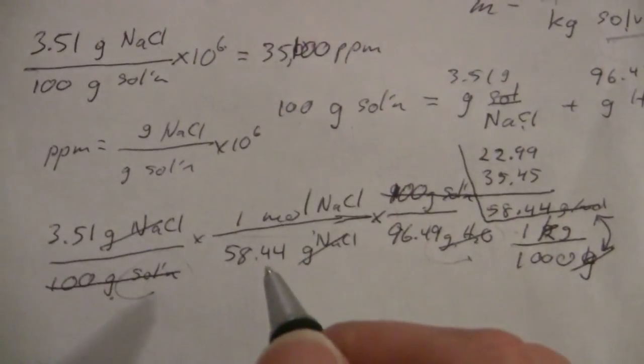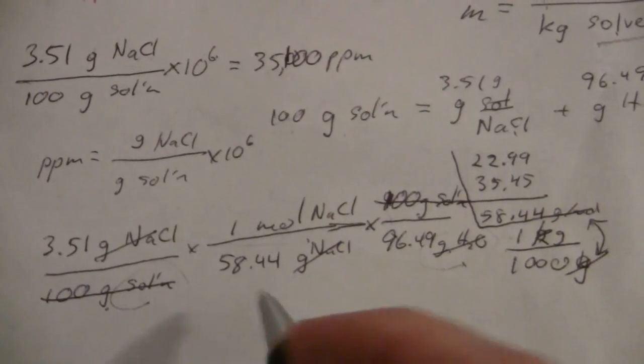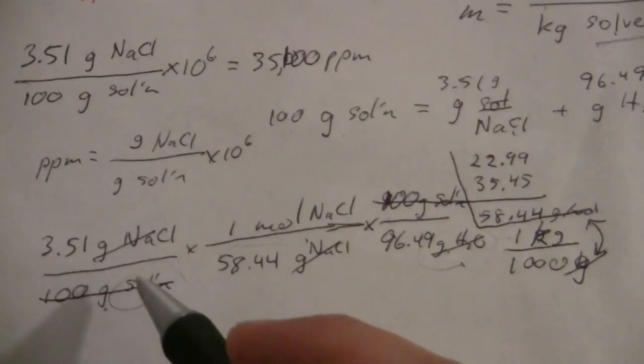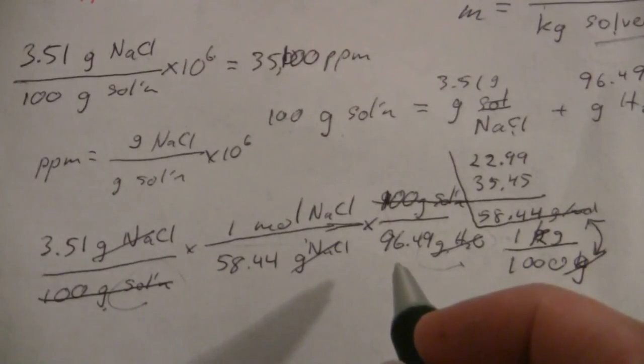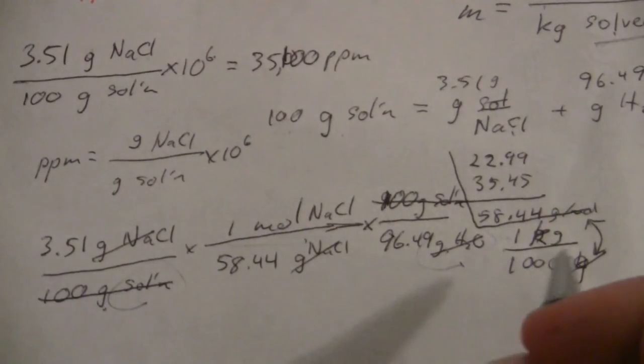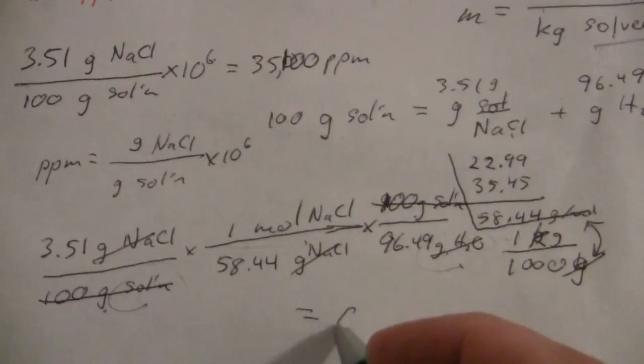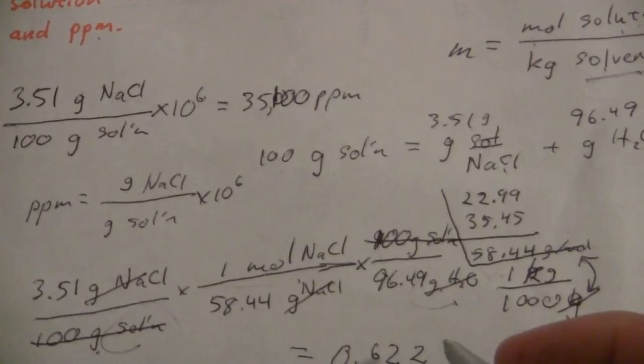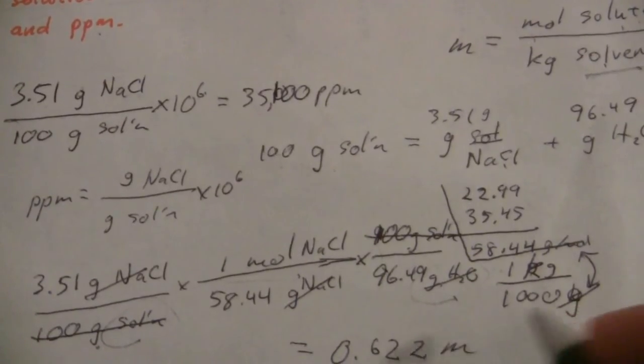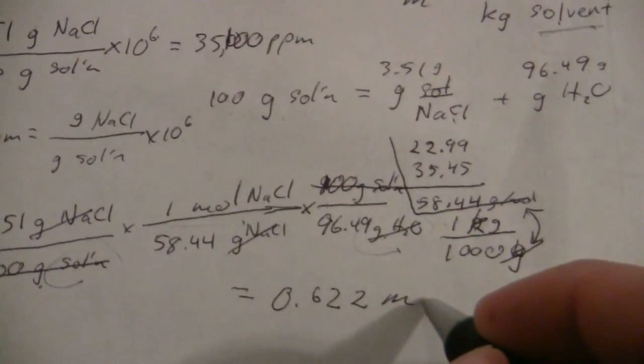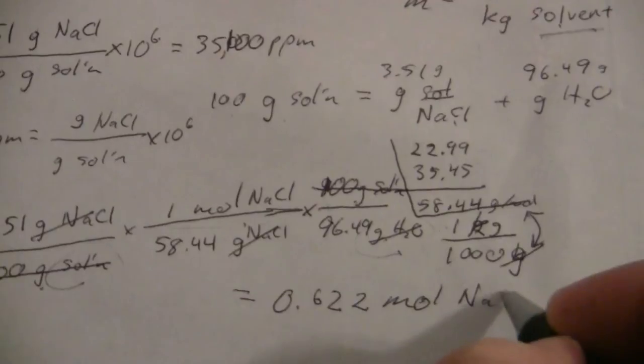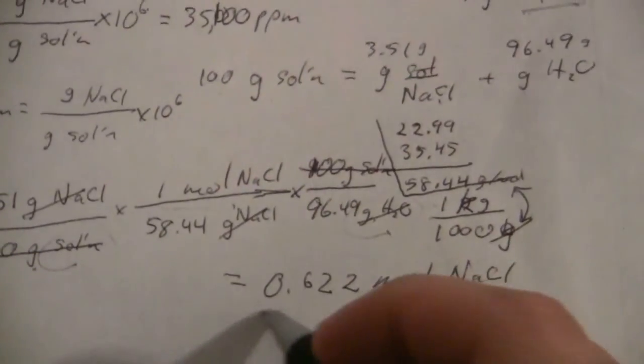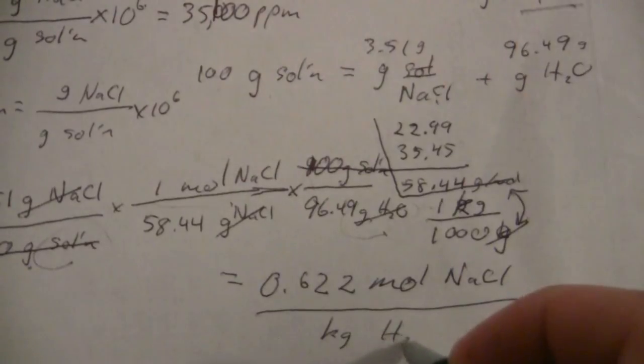All right, so let's go ahead and put this in the calculator, and what we come up with: 3.51 divided by 58.44 divided by 96.49, and then times 1,000, and we end up with 0.622 molal. Because that is the moles of NaCl per kilogram of water.